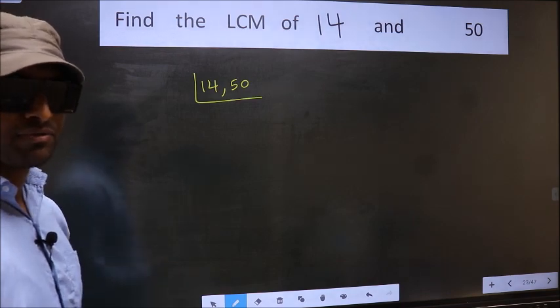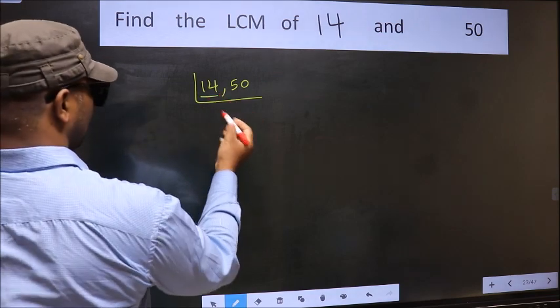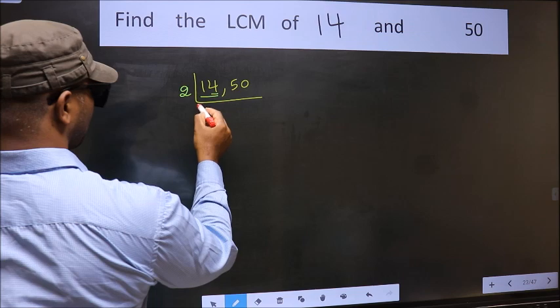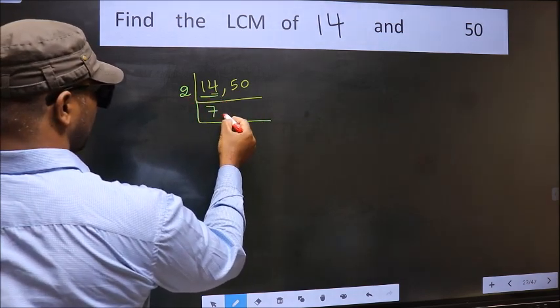Now, you should focus on the first number which is 14 here. For this number, last digit 4, even, so take 2. When do we get 14 in the 2 table? 2 times 7 is 14.